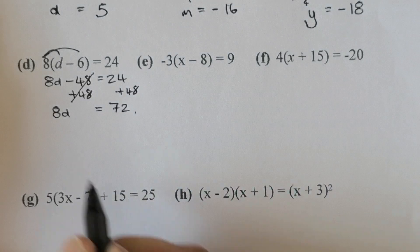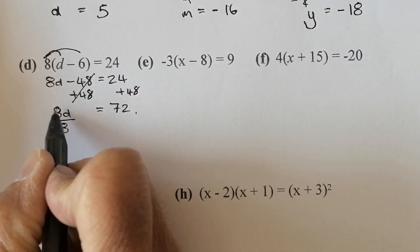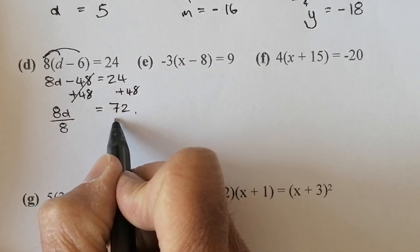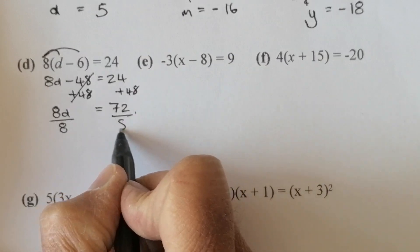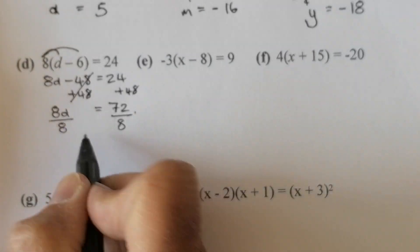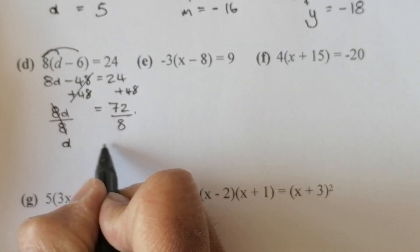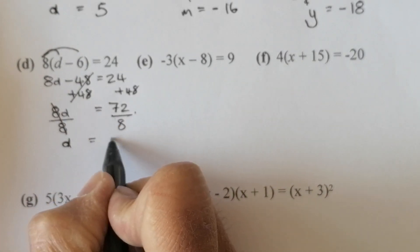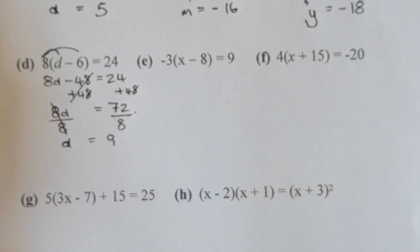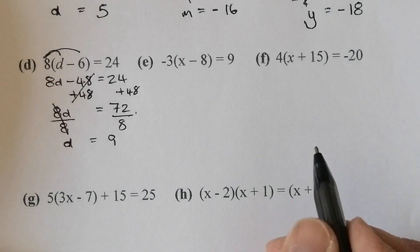I'm going to divide by 8 on that side and divide by 8 on that side — do the same to left as to right. That leaves me with d on this side, and that'll give me an answer of d equals 9 in that equation.